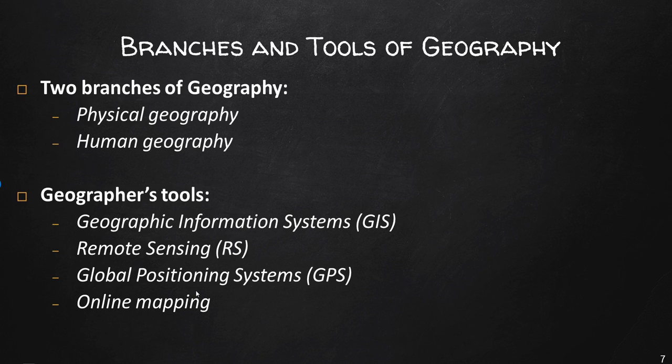Geographers use many tools and techniques in their work. Geographic technologies are increasingly common and among the most important emerging fields for understanding this complex world. These include geographic information systems, remote sensing, global positioning systems, and online mapping — all employing the spatial perspective to problem solving. At CWI we offer several geographic information systems classes, Geog 126 and Geog 226, as well as a Global Positioning System course, Geog 155.